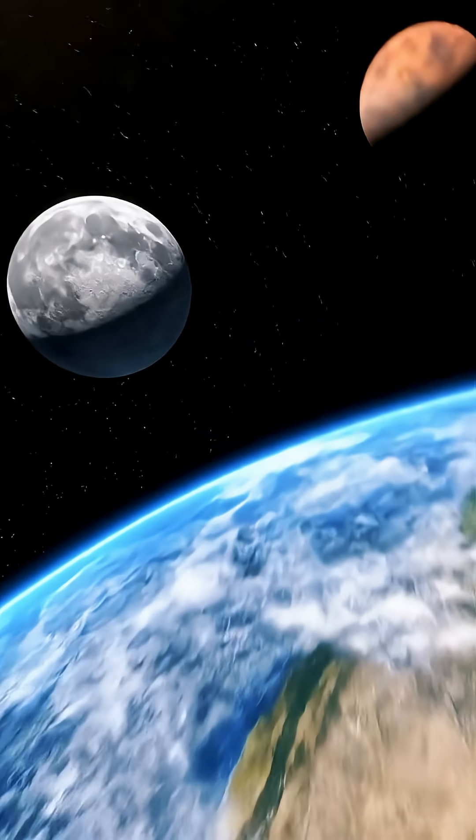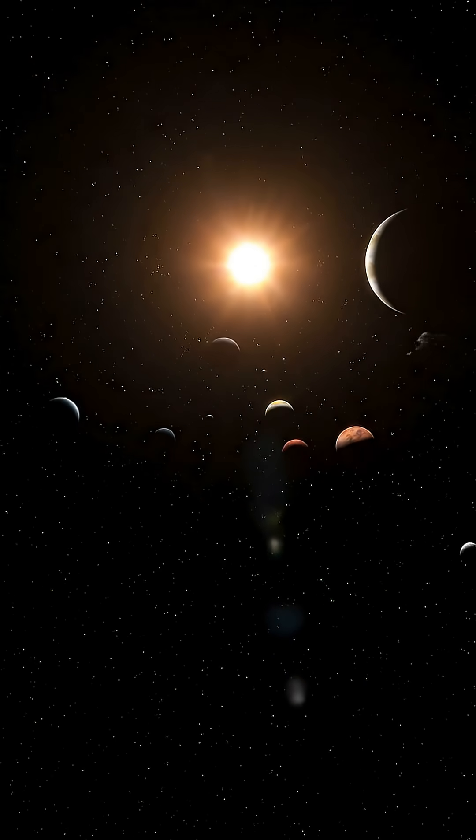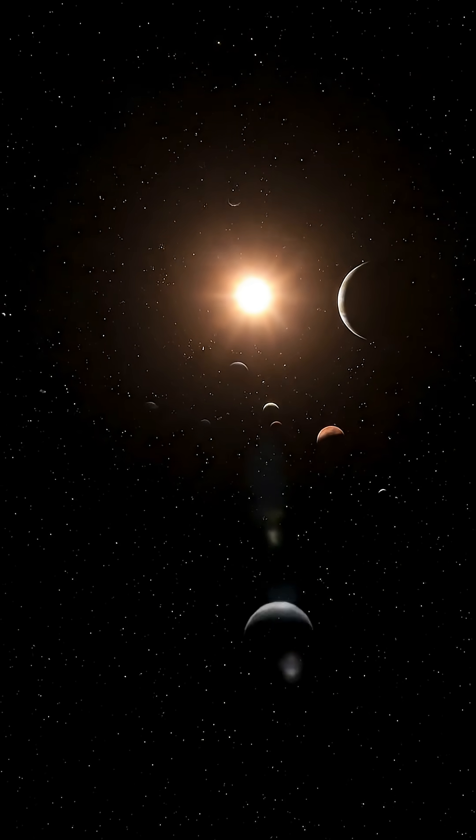If Earth were the size of a basketball, the moon would be a tennis ball 24 feet away, and the sun would be two and a half miles away.